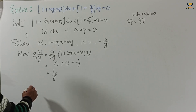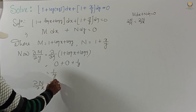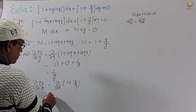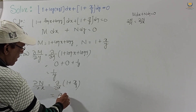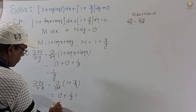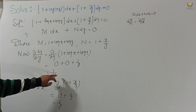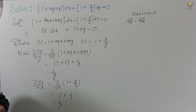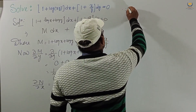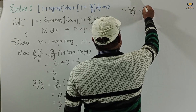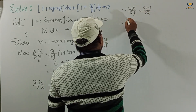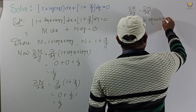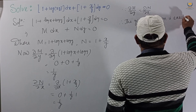Now for ∂N/∂x, where N equals 1 plus x/y: differentiating with respect to x, the constant 1 gives 0, and x/y with y constant gives 1/y. So ∂N/∂x equals 1/y. Since ∂M/∂y equals ∂N/∂x, the given equation is exact.